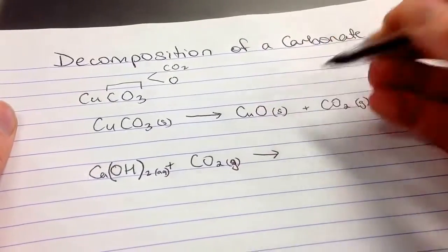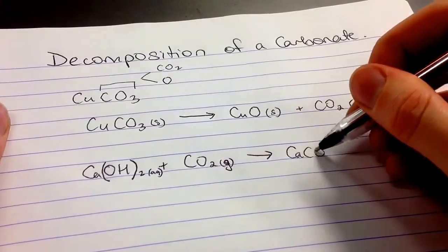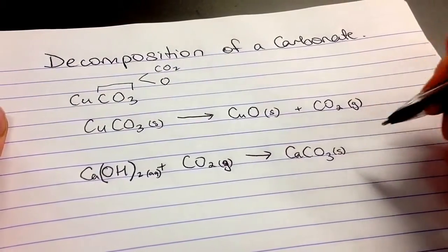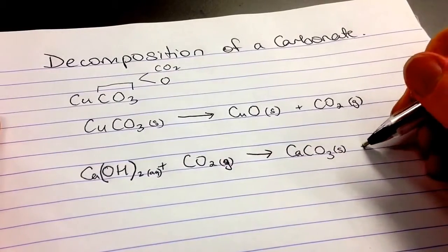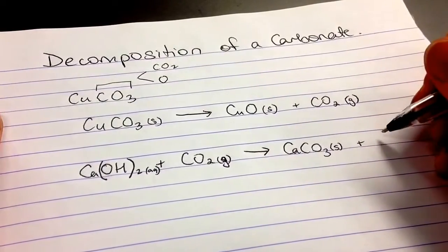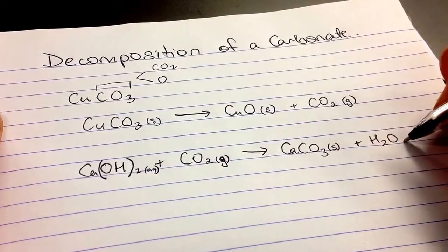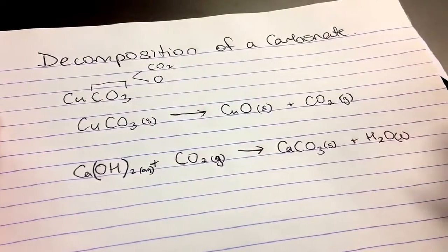When we added the carbon dioxide gas to it, we produced calcium carbonate. And that was a solid that we saw, which made the lime water cloudy. And we also got water left over, which is a liquid.